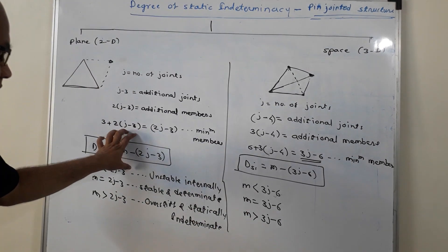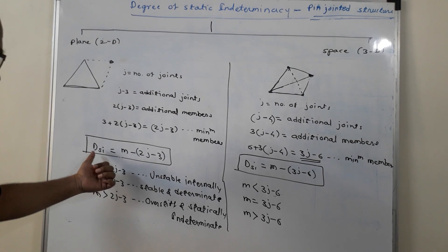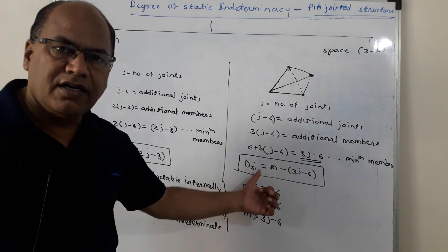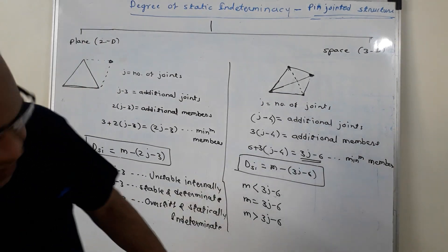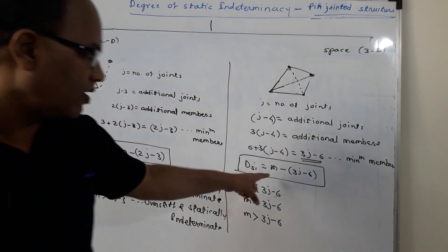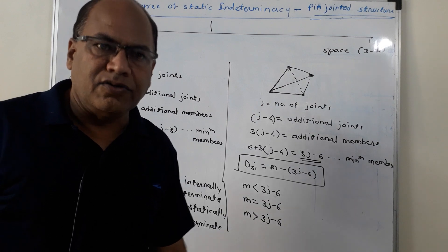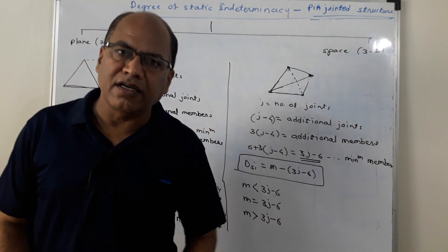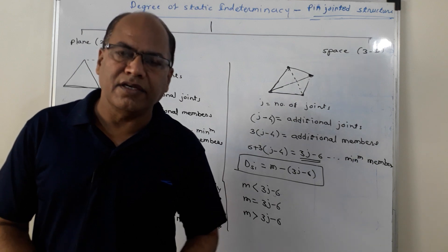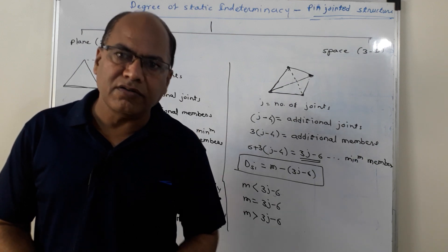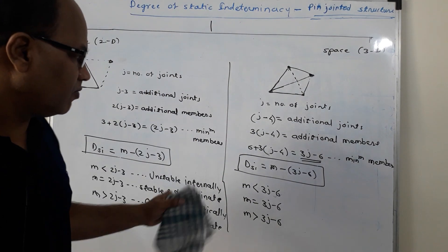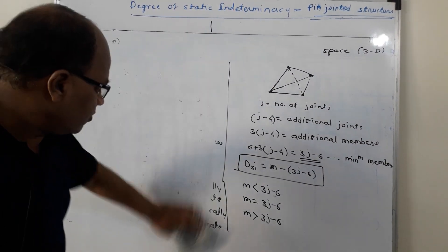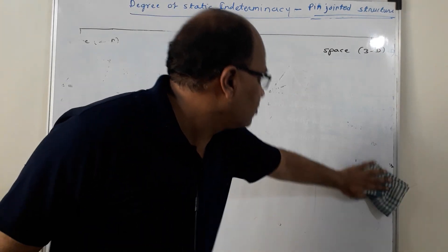The degree of static indeterminacy for plain structures is DSi = m − (2j − 3), and for space structures it is DSi = m − (3j − 6). In order to know the statical determinacy or indeterminacy of pin-jointed structures, we must work out the minimum number of members required. Let us see one example to make it easier to calculate.